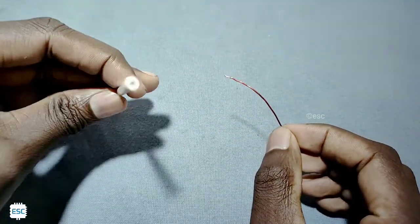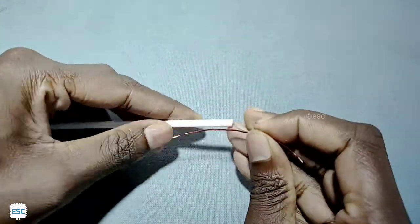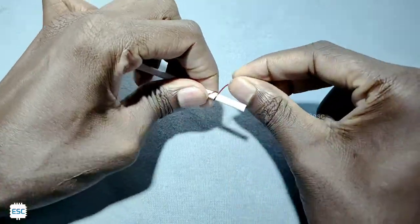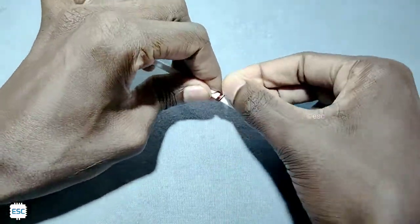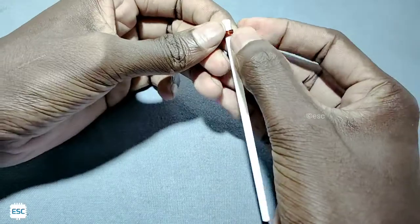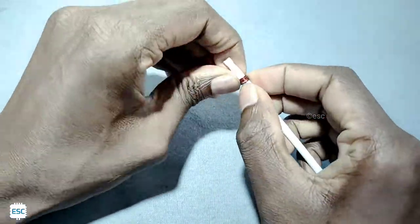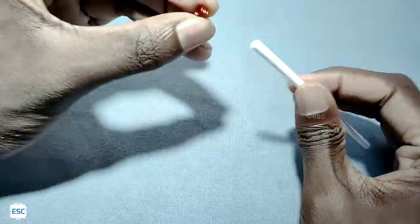First I took some enameled copper wire and wrapped four turns on a plastic tube. Then I removed the plastic tube.